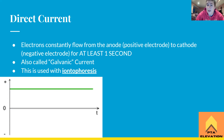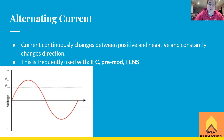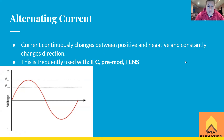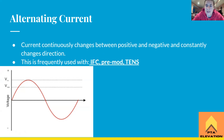With iontophoresis, we're pushing medication and ions through from the positive electrode to the negative electrode. Alternating current is more commonly used with IFC, PREMOD, and TENS — the current constantly changes between positive and negative, often shown as a sinusoidal wave going up and down. This is what produces that tingly sensation rather than the direct sting of DC.